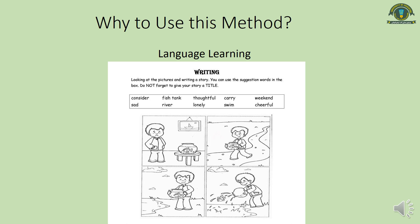Now the question is why to use this method. We use this method in language learning — that is the first important factor. Looking at pictures and developing stories, we can come up with different words and think about so many different options. Looking at this picture and writing a story, you can use the suggestion of the words in the box, and do not forget to give your story a title. In this way, we are using our language abilities.